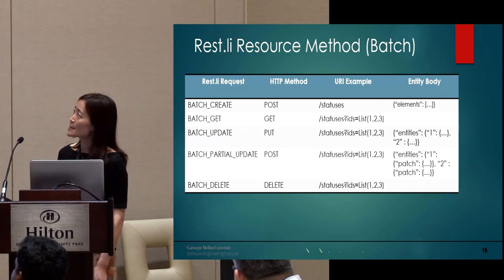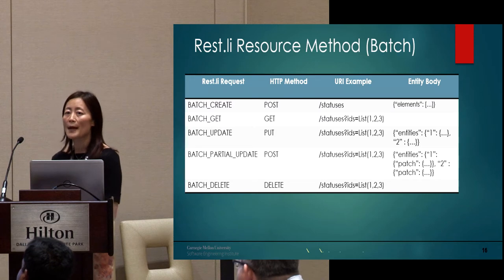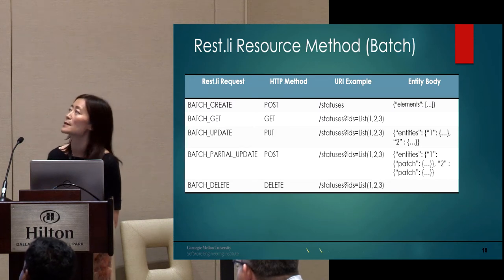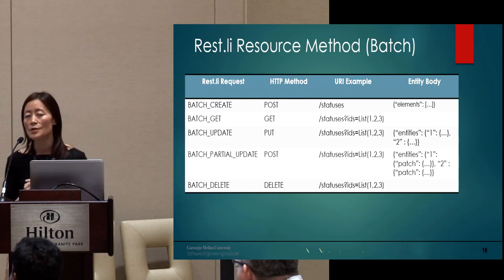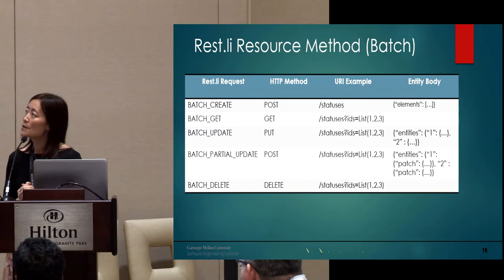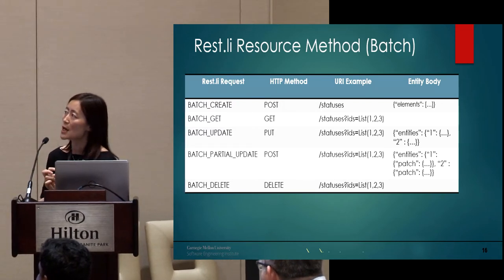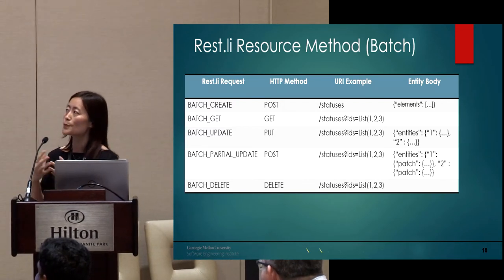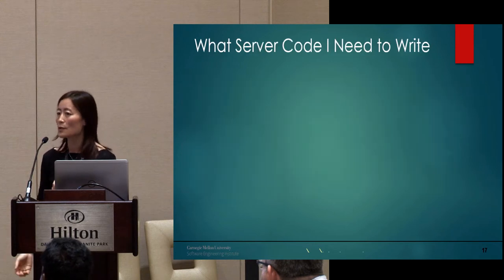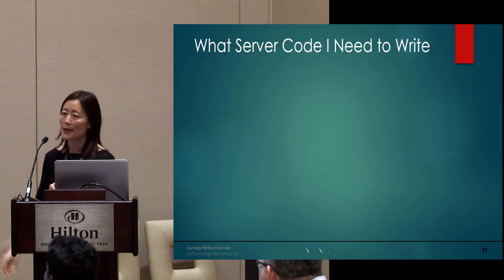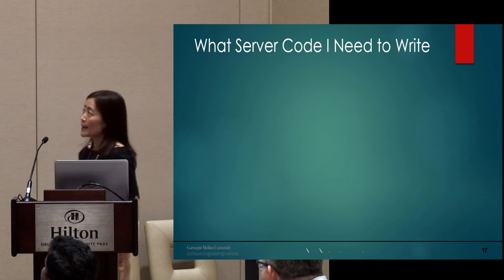Besides basic resource methods, Rest.li also provides a batch version of these methods to reduce round trips to your server. Server developers can use batch methods for performance optimization — for example, caching or database batch queries.